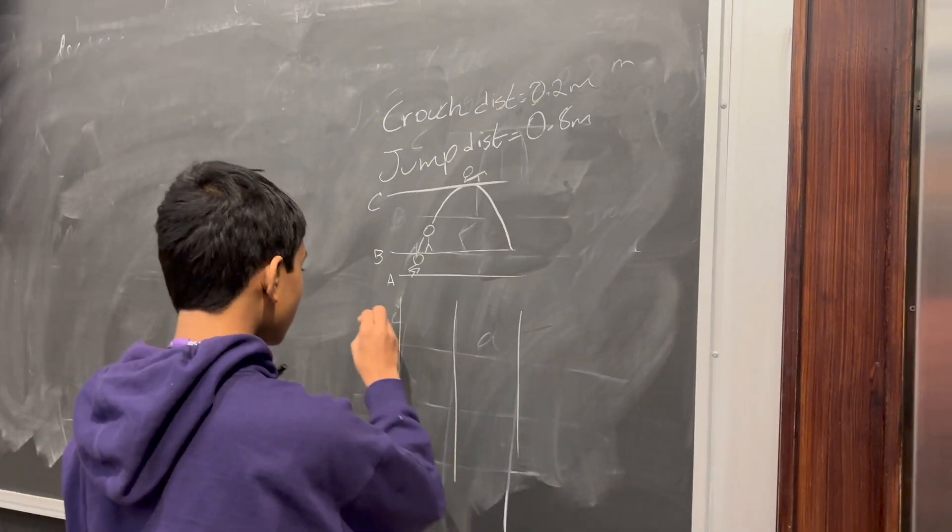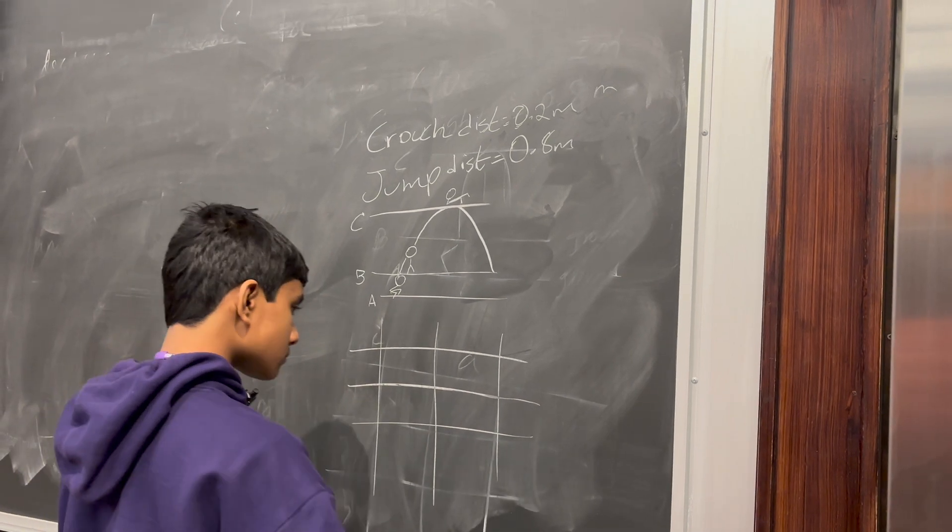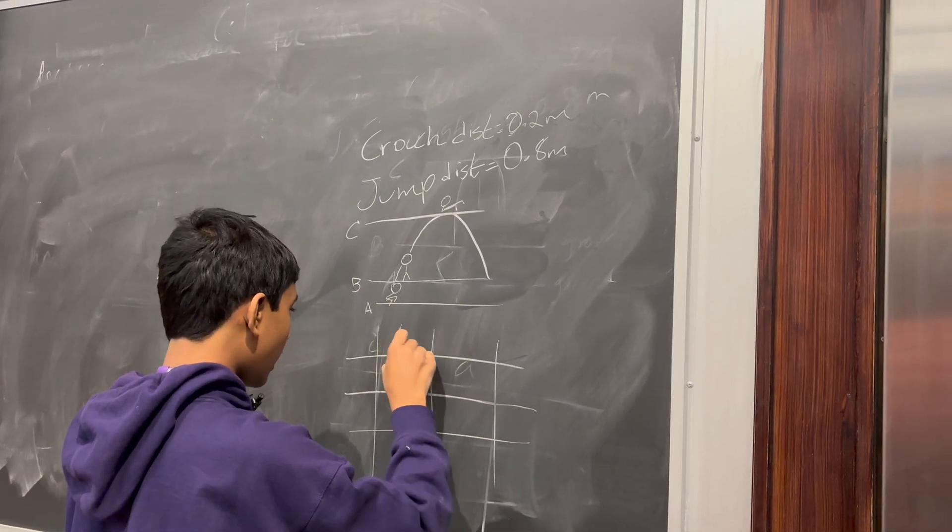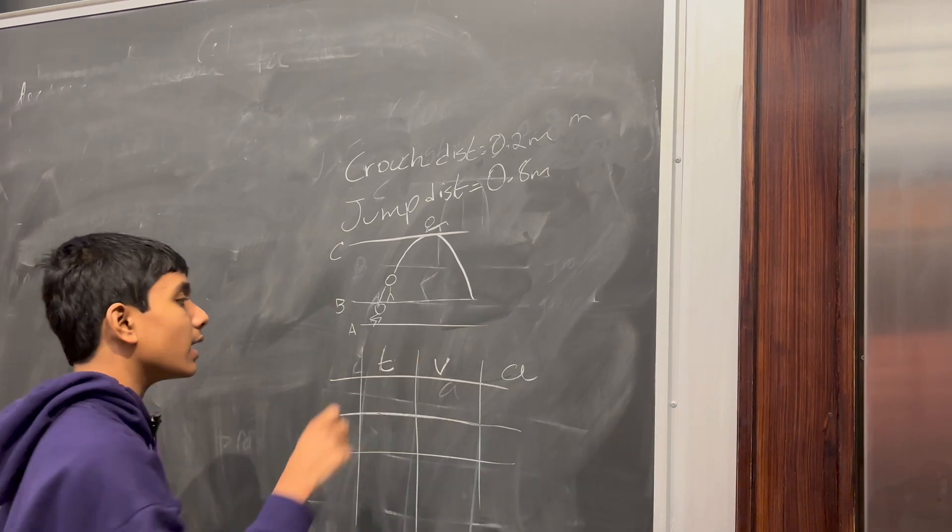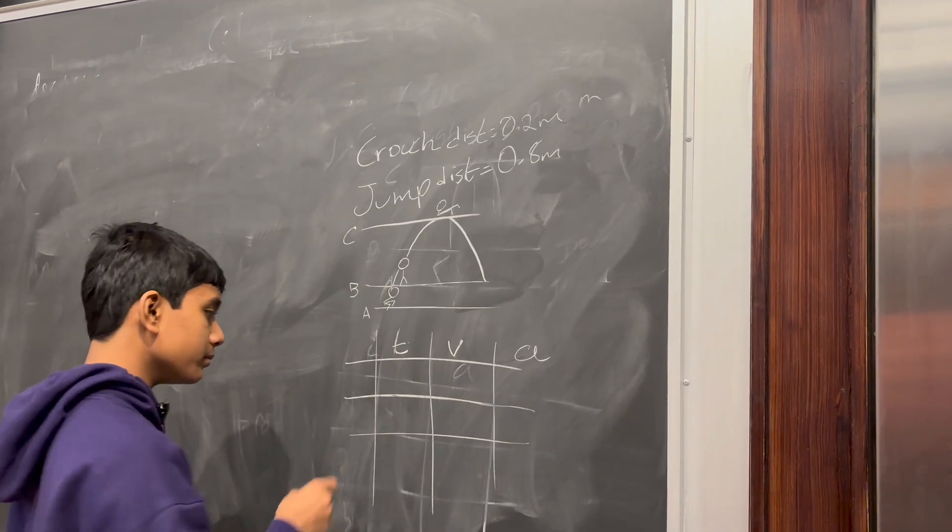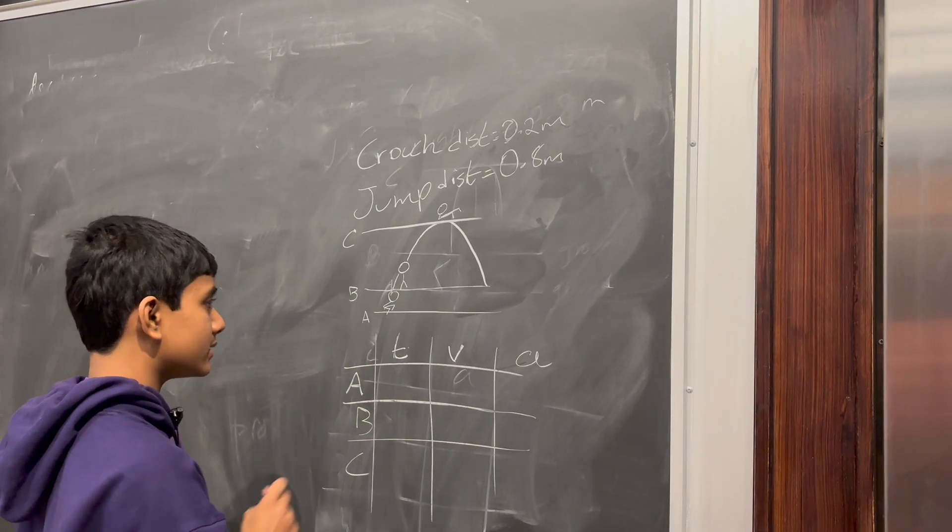So, we're going to find the time, the velocity, and the acceleration starting from when he jumped at location A, location B, and location C.